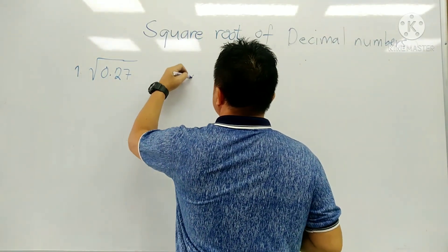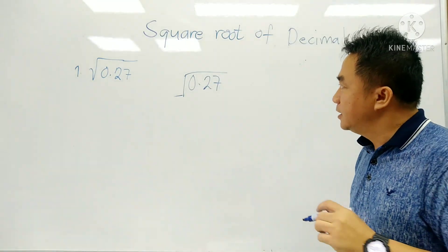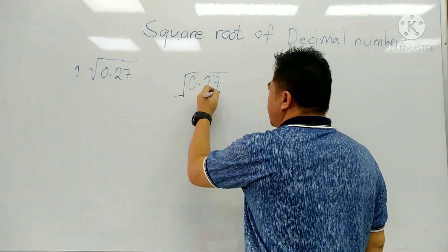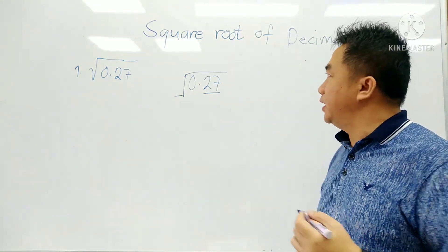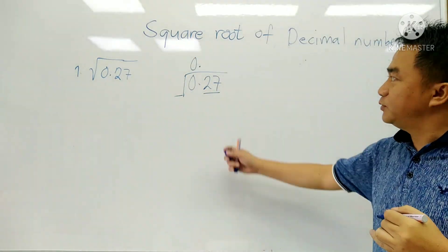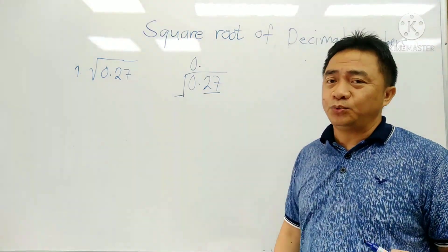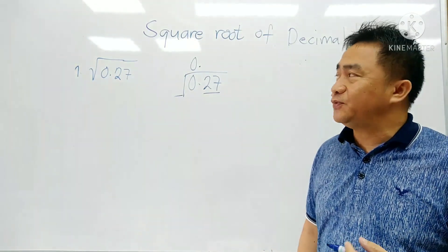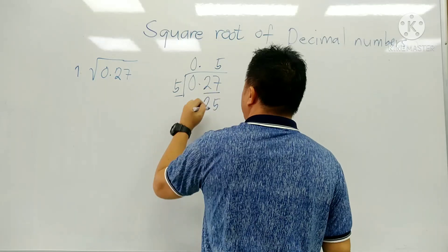So we have 0.27 and again we divide that. Since to the left we have only 0, we go to the right — we have 27 here. So the same thing that we're going to follow. We put here the point for the decimal, and we start with 27. What is the square root which is equal or lesser than 27? That is 25, and the root for that is 5 times 5. So 5 and 5, we have 25.